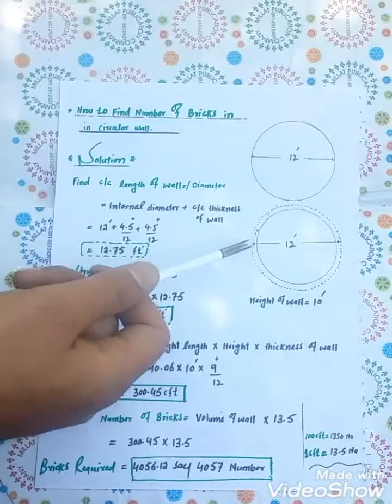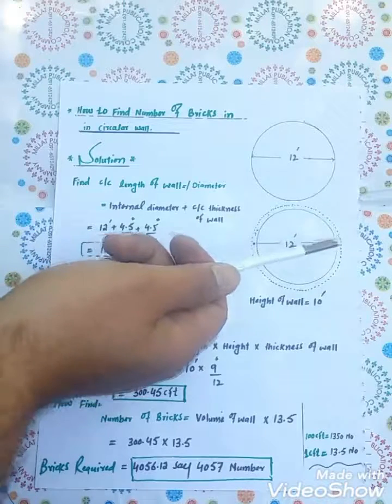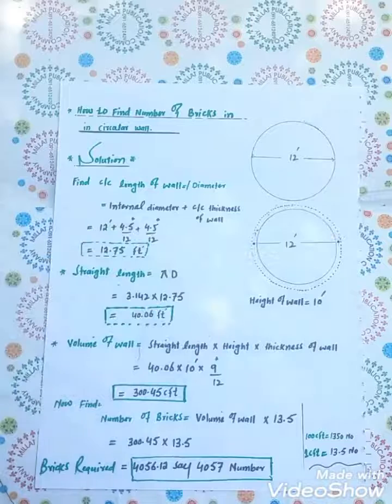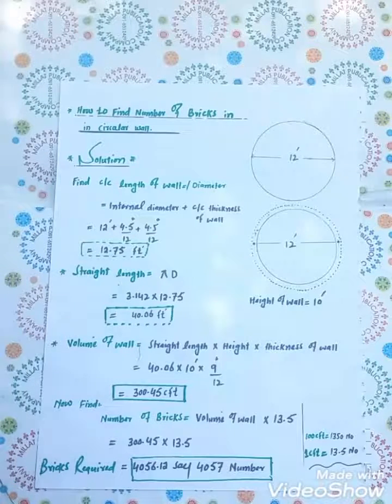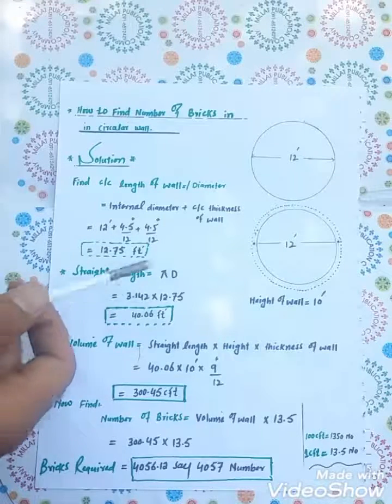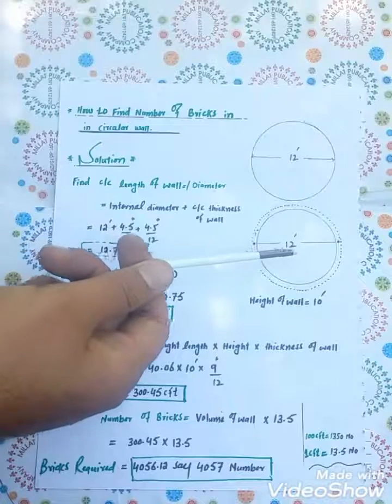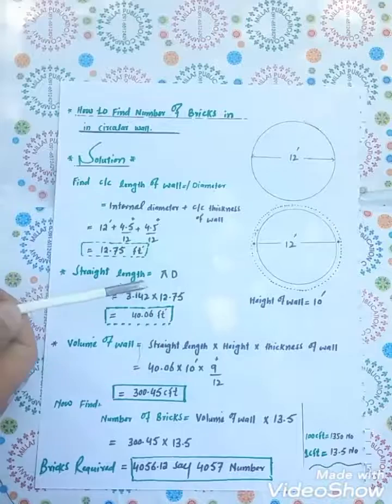Which equals 12.75 feet straight length. Now we convert this circular wall into straight wall.